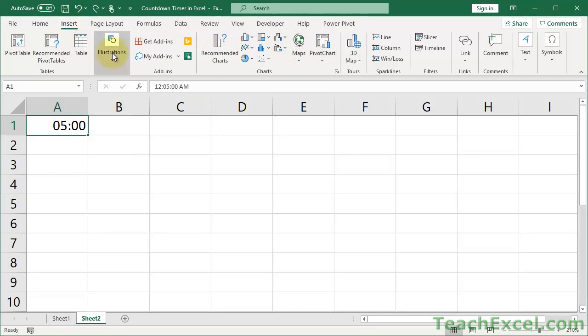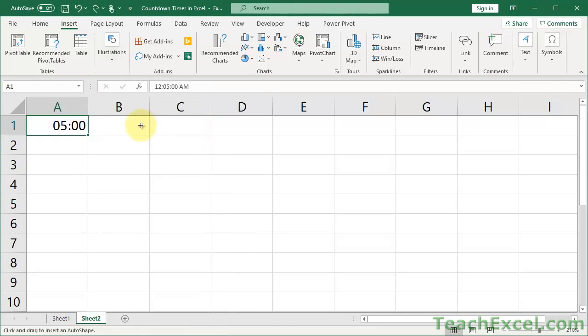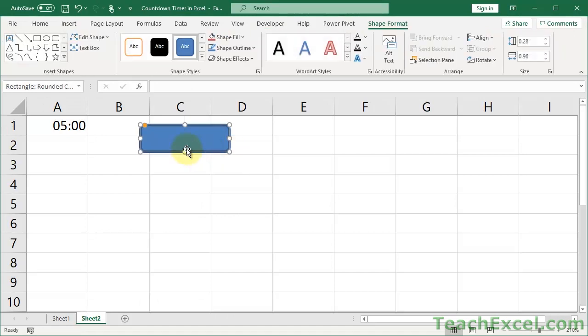Let's go to Insert. And where do we go now? Illustrations, Shapes. I like to choose Rounded Rectangle. Whatever you want. Choose one. Go ahead. Do Start. Timer.